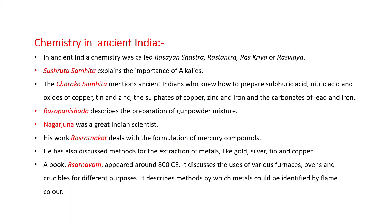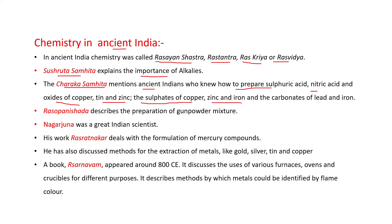Chemistry in ancient India — in ancient India, chemistry was called a science known as Rasa-tantra, Rasa-kriya, or Rasa-vidya. Charak Samhita mentions ancient Indians who knew how to prepare sulfuric acid, nitric acid, and oxides of copper, tin, and zinc, as well as sulfates of copper, zinc, and iron.